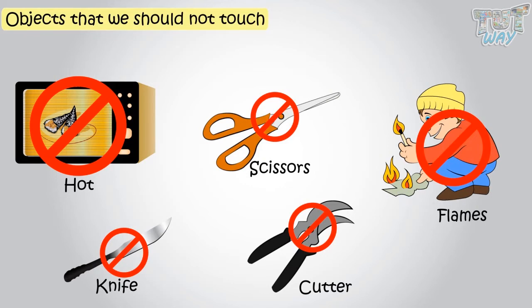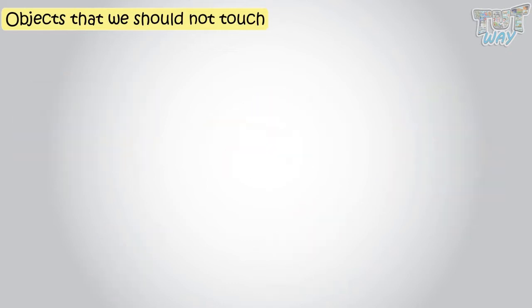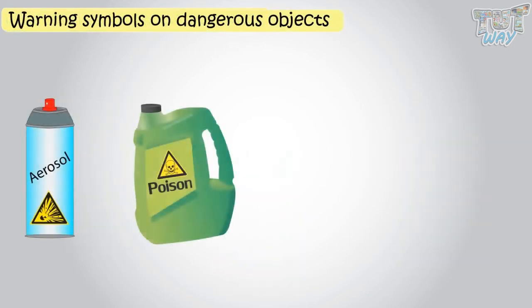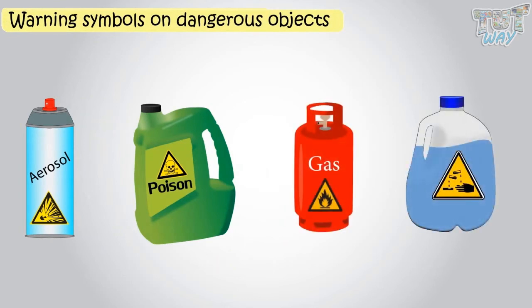Now let's see which type of things we should not touch. There are various things on which various symbols are made that tell us that those objects are dangerous for us. Now let's see some warning symbols that can be there on some liquids or solids.